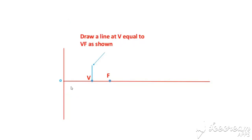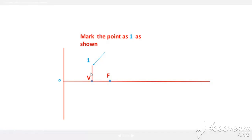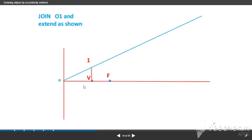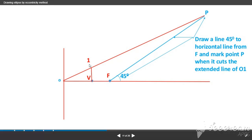Draw a line at V equal to VF. The distance VF equals VA. Give the name. Suppose I am giving the name, mark the point as 1. That is, V1 equals VF as a distance. Join O1 and extend as shown. Draw a line 45 degrees to the horizontal line from F and mark point P when it cuts the extended line O1.